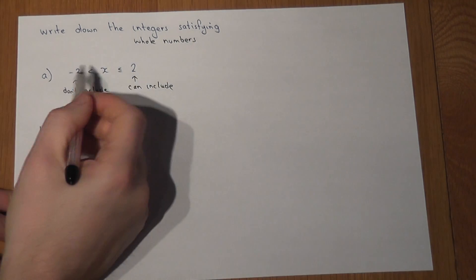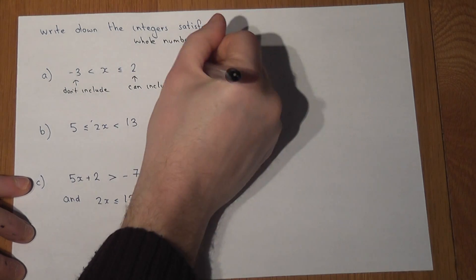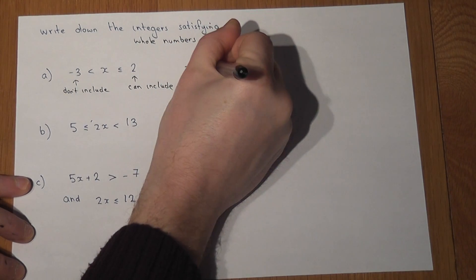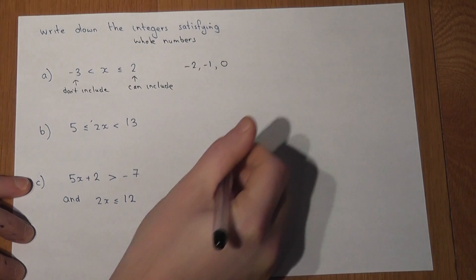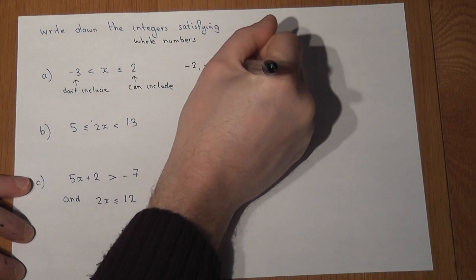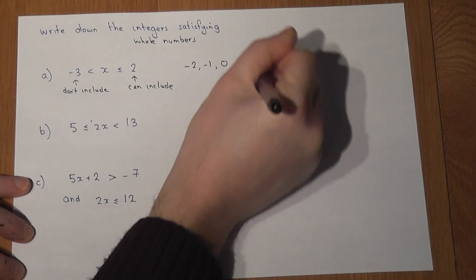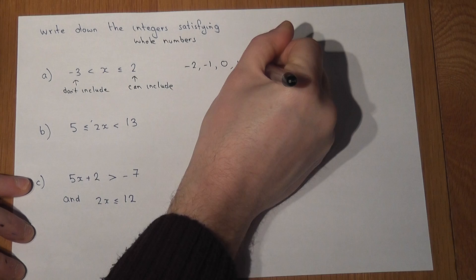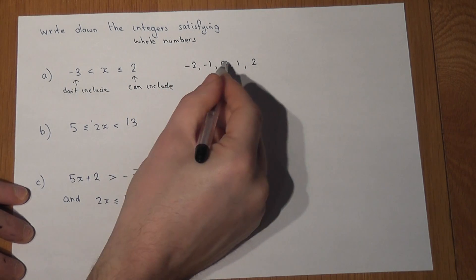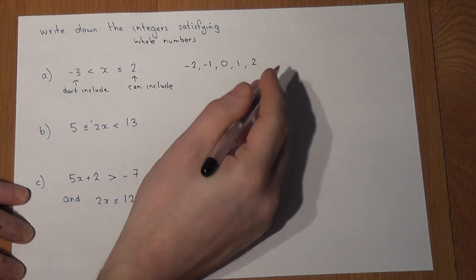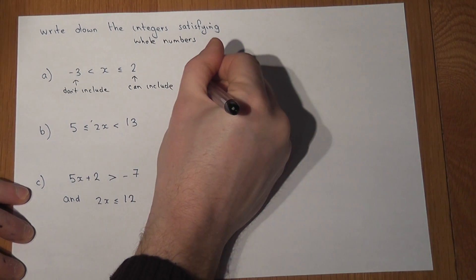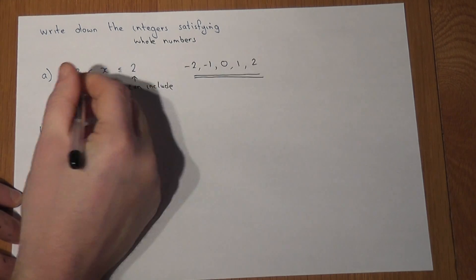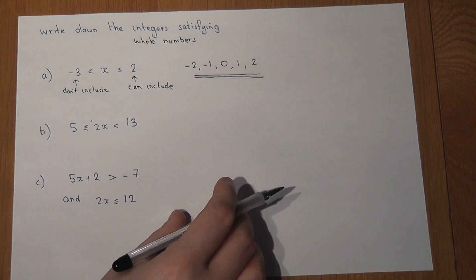So we can include minus two, minus one, zero is okay, one is also okay, and we can include two. Therefore minus two, minus one, zero, one and two are the whole numbers which satisfy this particular inequality.